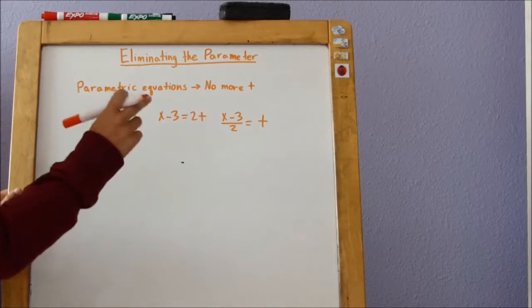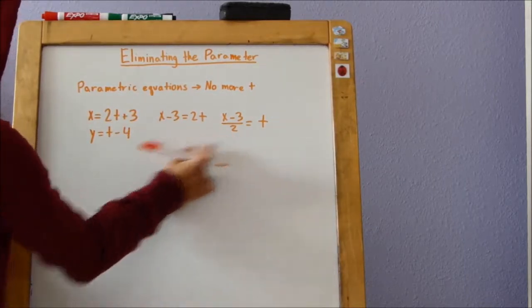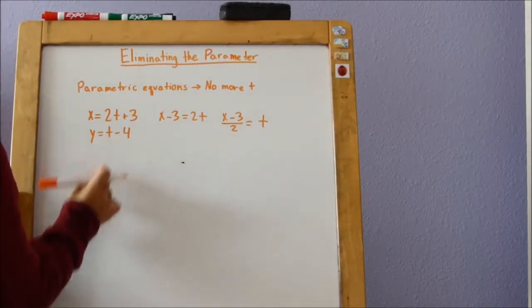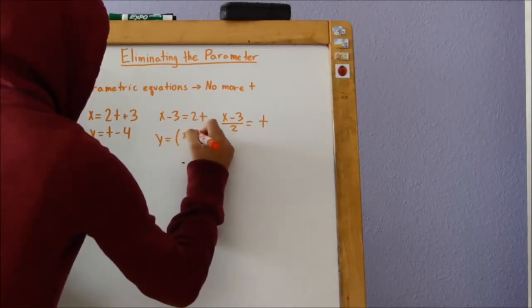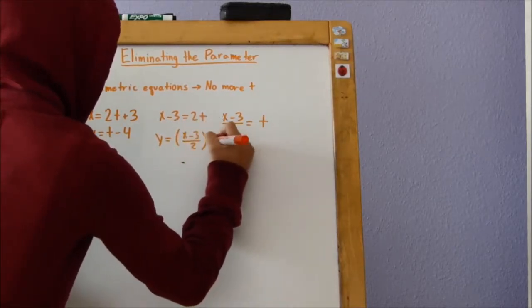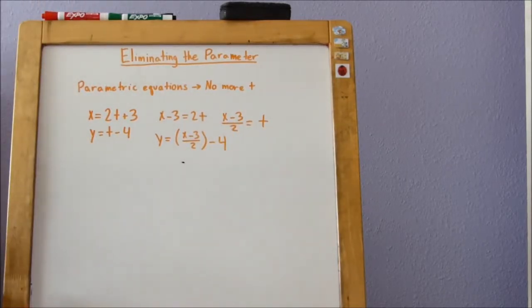So now that we have solved for t, we can just take this here and plug it into this t here. That way we get y equals x minus 3 divided by 2 minus 4. And we have eliminated the parameter.